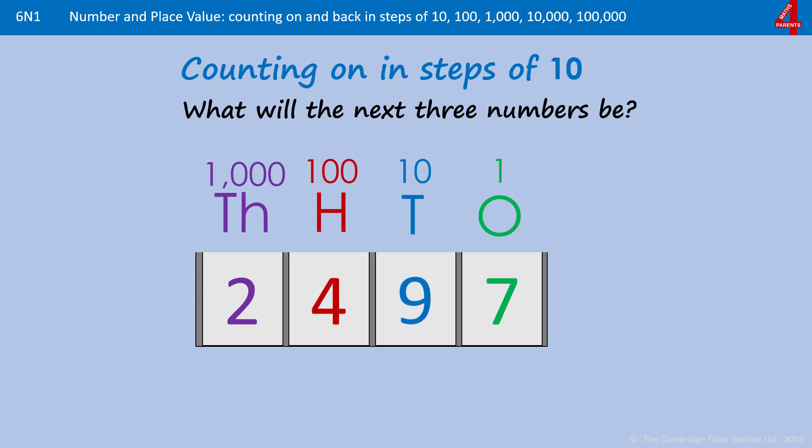Now if we add on another 10, that nine can't get any higher. It has to go back to zero. Because zero is a smaller value digit, that means that the digit in the hundreds column needs to go up by one. When we add 10 to 2497, the tens will go to zero and the hundreds will go to five.